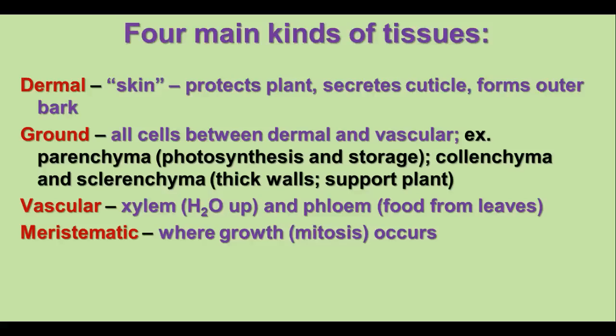Ground tissue is all the cells in between the dermal tissue and vascular tissue. For example, parenchyma cells used for photosynthesis and storage would be considered ground tissue. The colenchyma and sclerenchyma that provide support for the plant would also be ground tissue. Vascular tissue is the third major kind, and it transports water and minerals from the roots via the xylem, and the phloem carries sugars and other products to the rest of the cells of the plant.